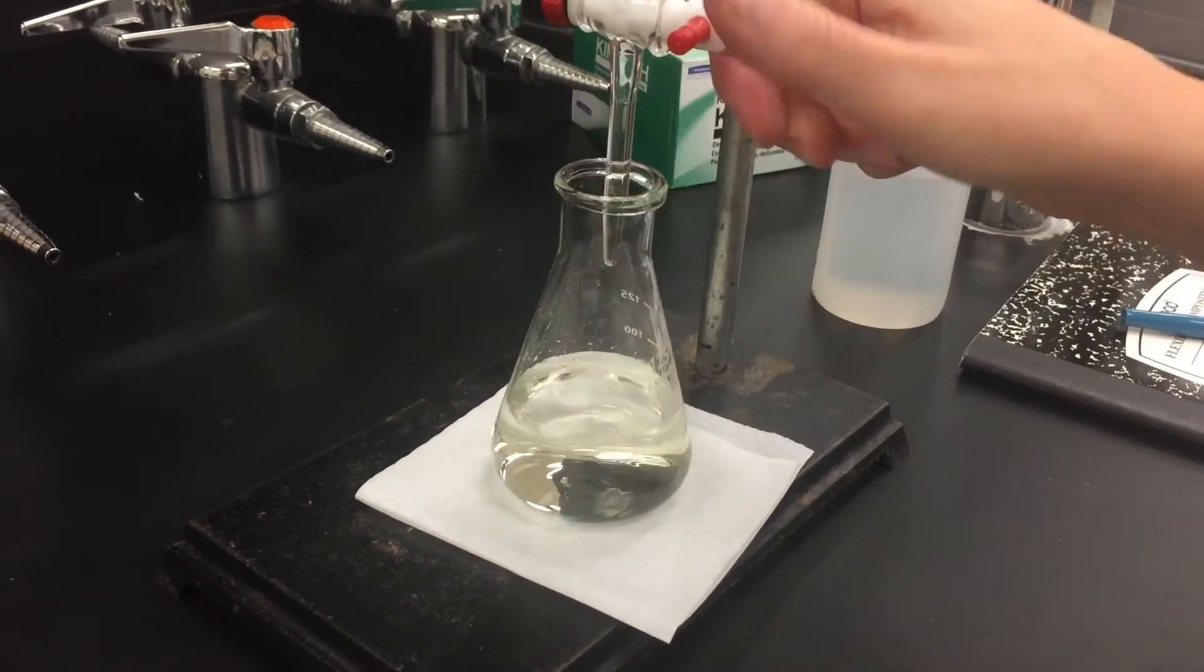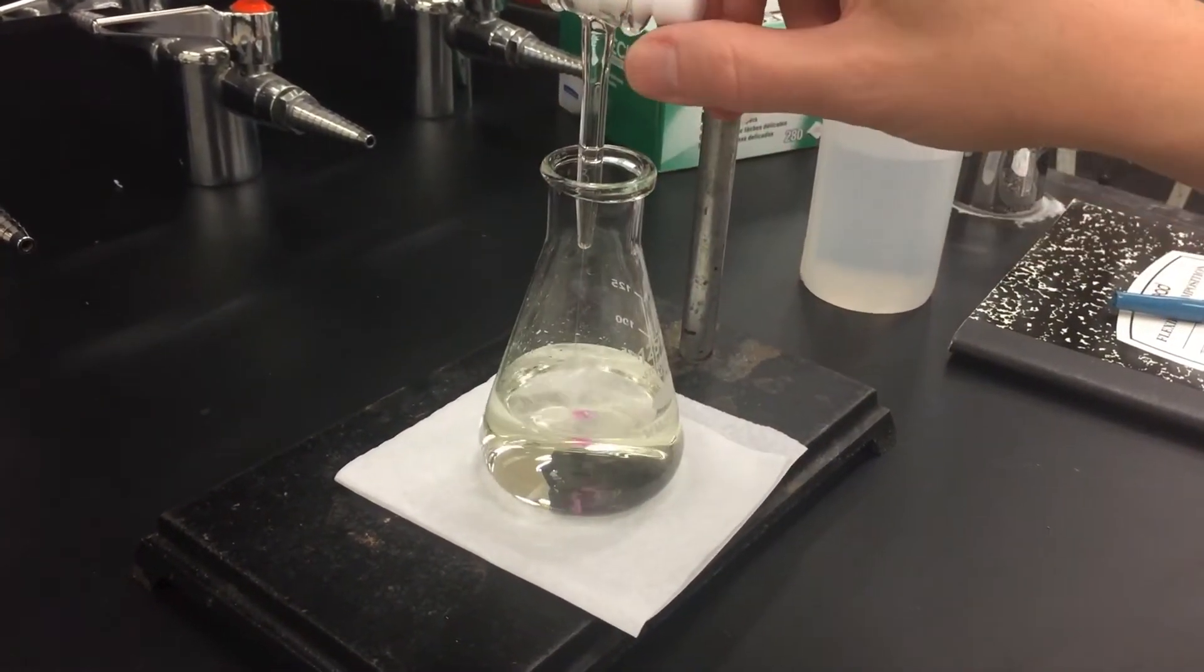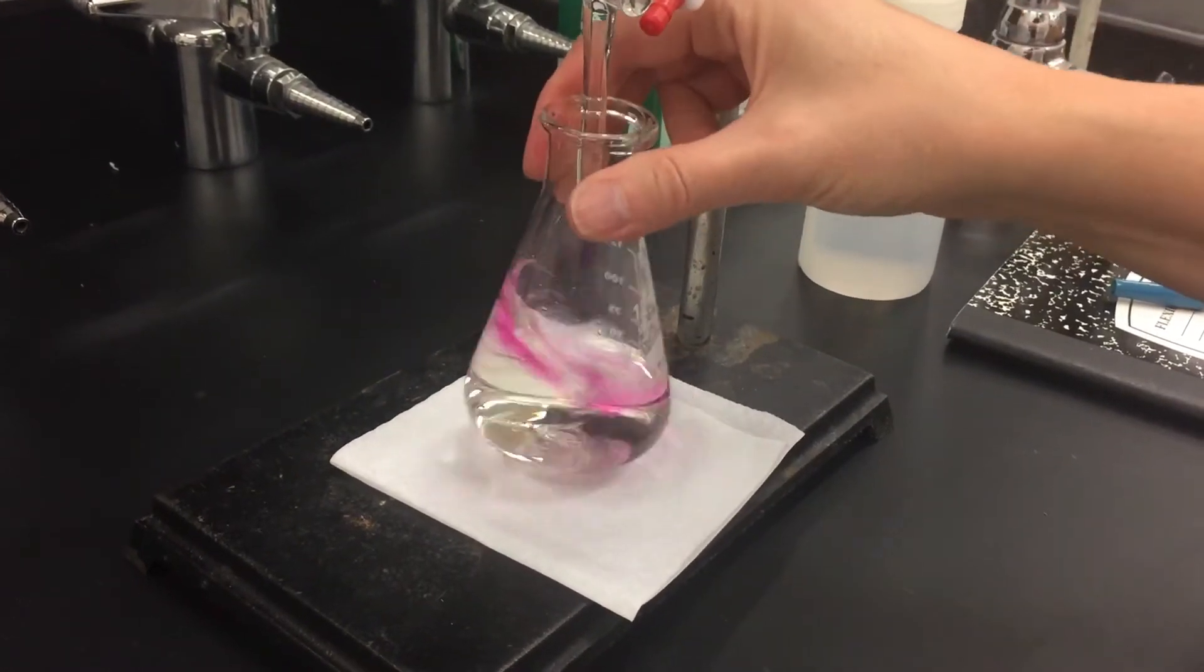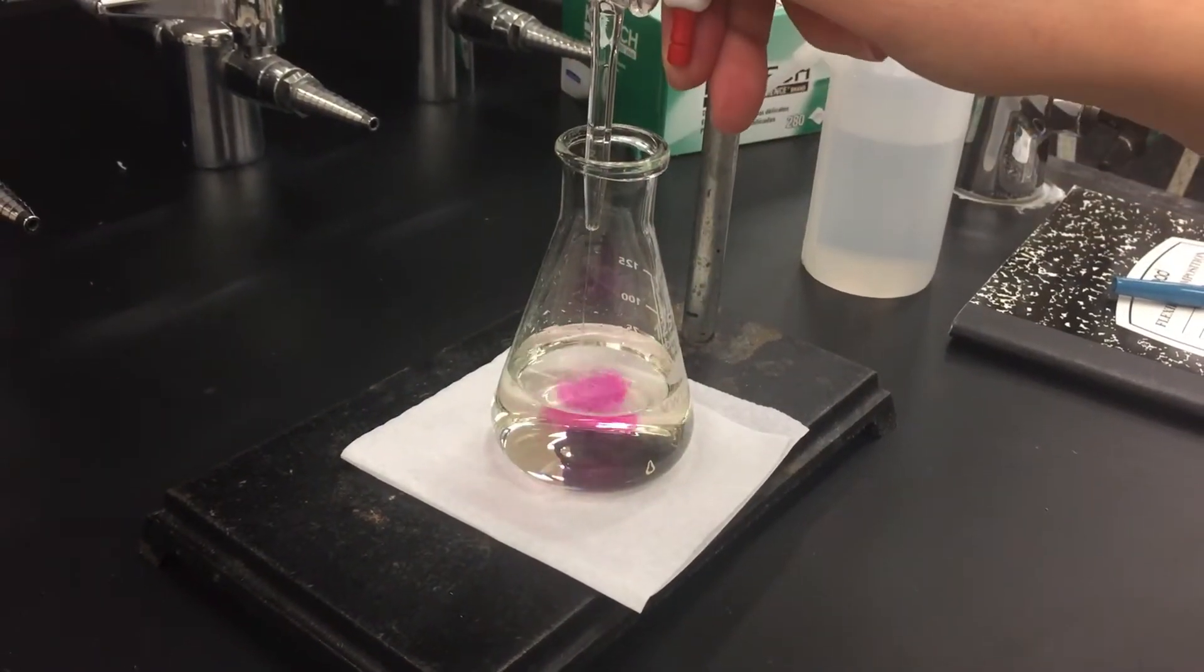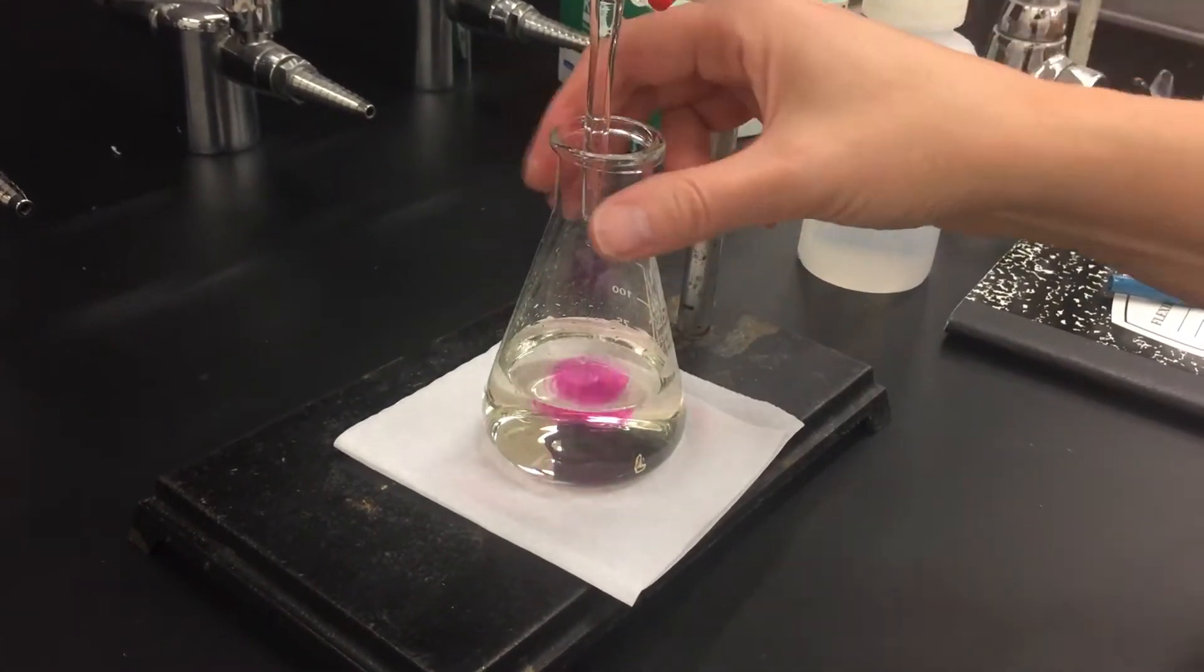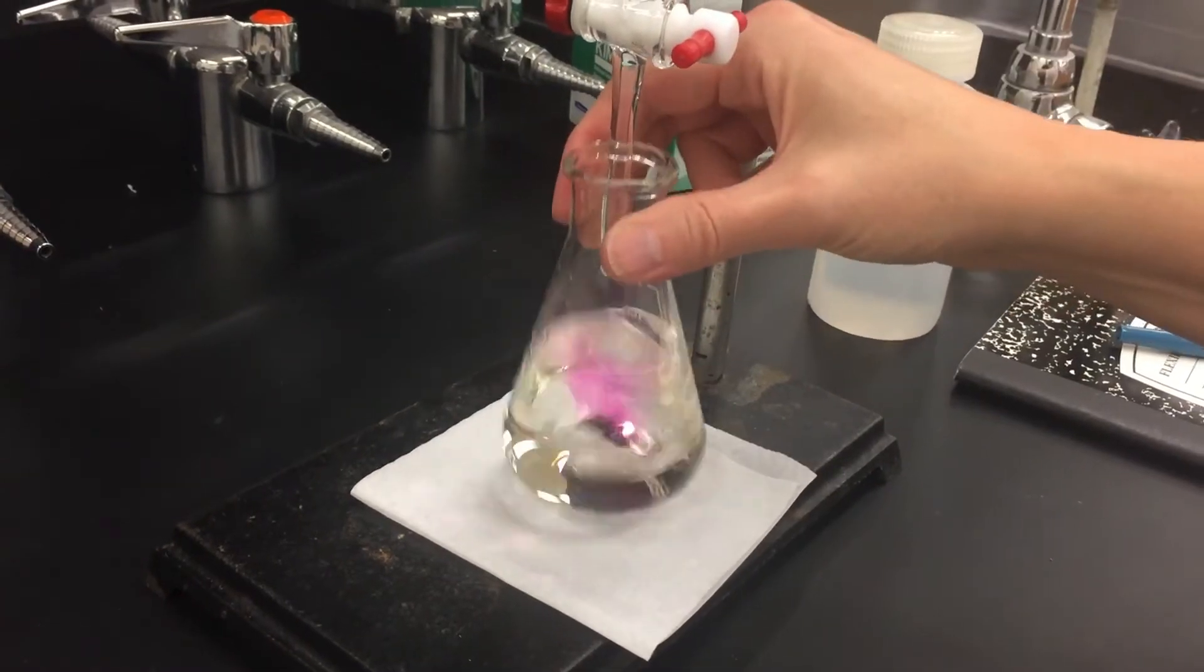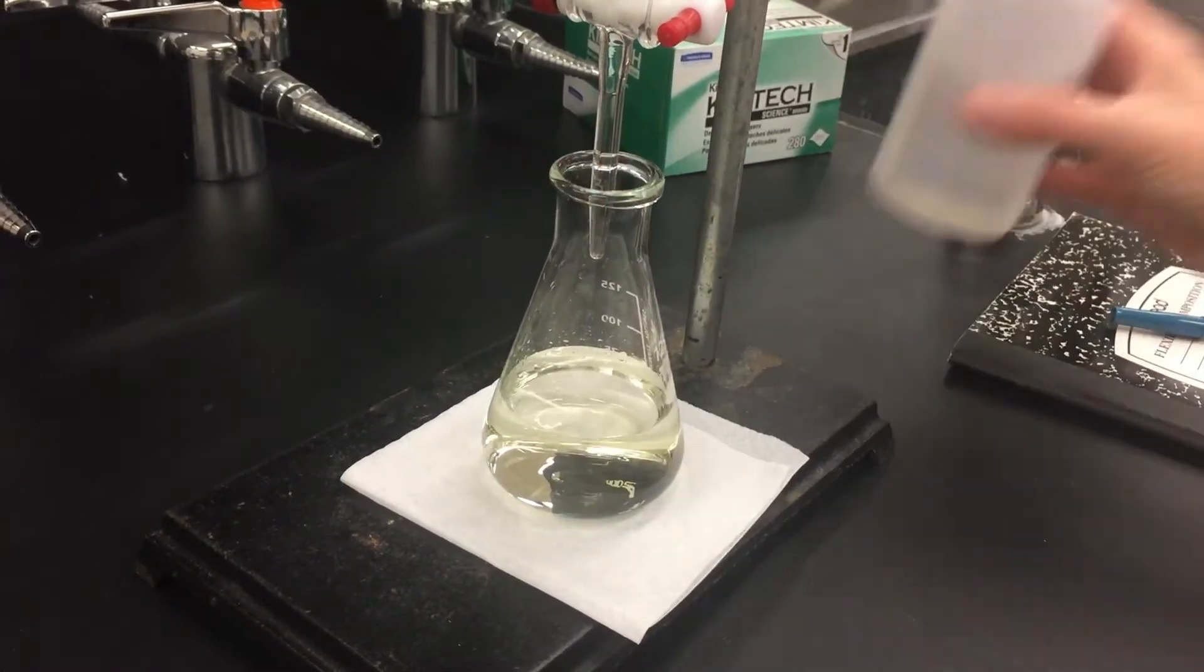Here I'm adding the base in portions and swirling, and notice every time I swirl the pink color goes away. The endpoint is going to be where it stays and we're looking for a really light light pink color so that we just exactly have neutralized the acid and the base together.